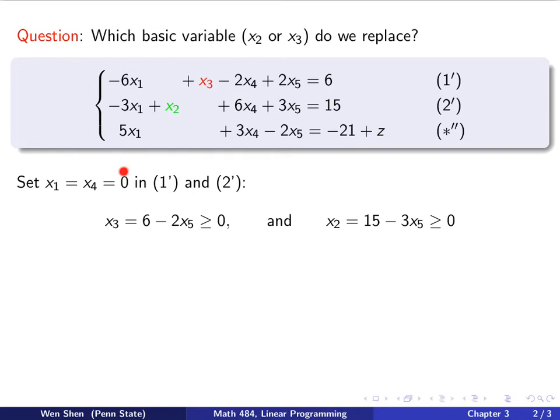This is all gone, and this is all gone. And then we can move the x5 to the right-hand side. So x3 is 6 minus 2x5. And x3 is a restricted variable, so this is bigger than or equal to 0.